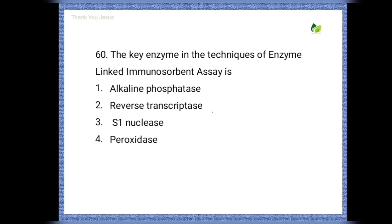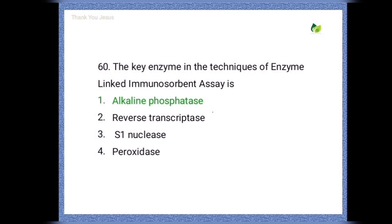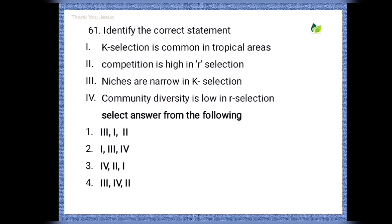The key enzyme in the technique of enzyme-linked immunosorbent assay (ELISA) is — options are alkaline phosphatase, reverse transcriptase, S1 nuclease, peroxidase. The correct option is alkaline phosphatase.